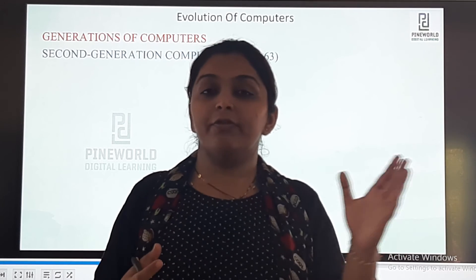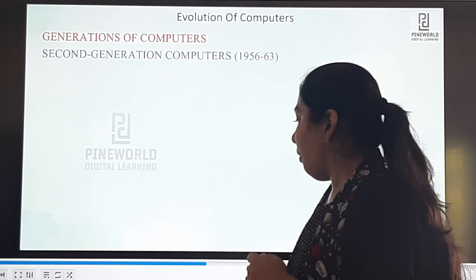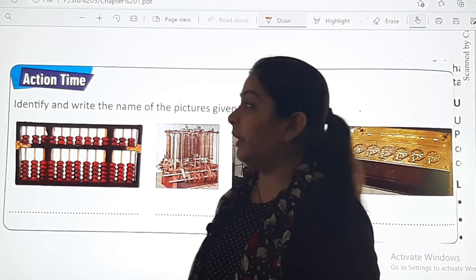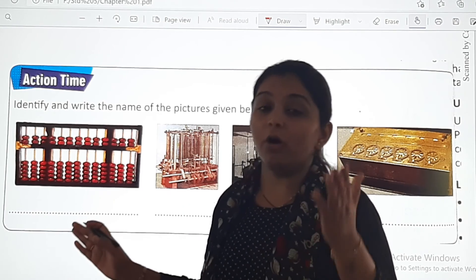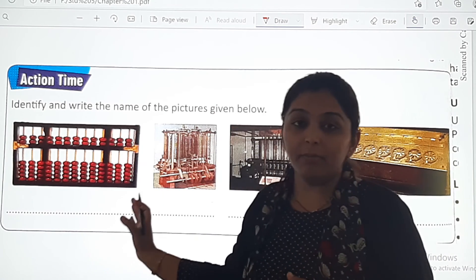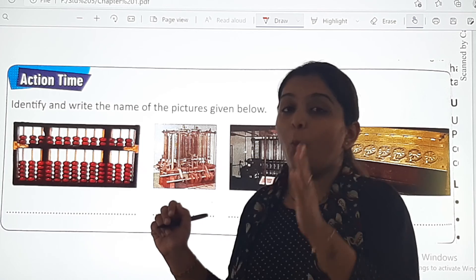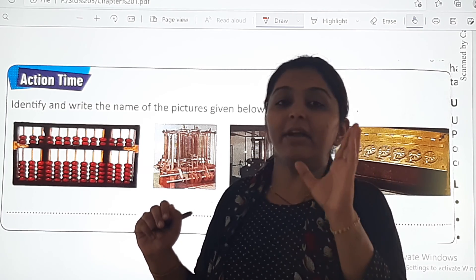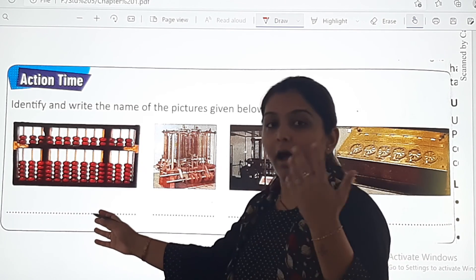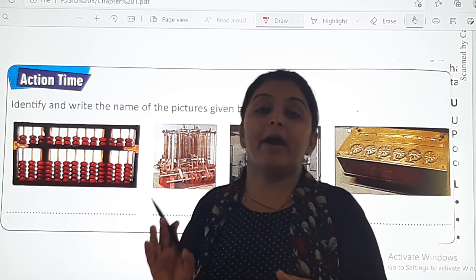I hope you are clear with the first generation computer. The second generation computer is what we will study in the next part. For today, there is a small worksheet which you have to complete. This action time activity is in your textbook — identify and write the name of the pictures given below. These pictures are from the history of computers studied in part one, so quickly recall and write their names. The first one is like Abacus.